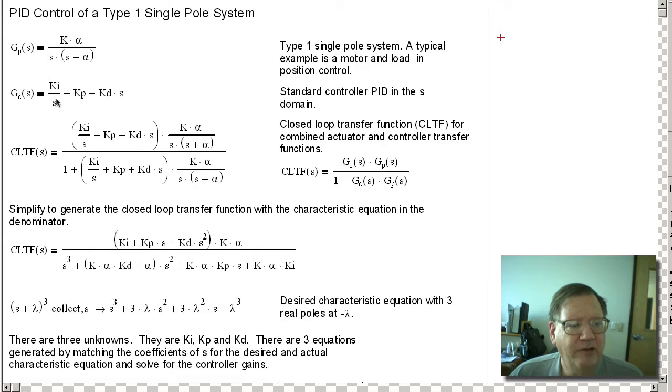The controller is a simple PID. The reason why we're using a PID is because we want to be able to place all three poles that are going to be in the closed loop transfer function. So to define the closed loop transfer function, we have the basic formula here. I'm going to substitute for the controller and the open loop transfer function and then simplify it so that we have the characteristic equation in the denominator.